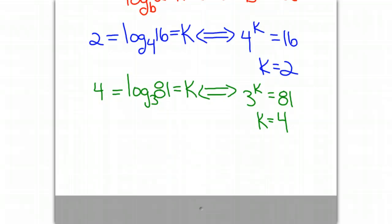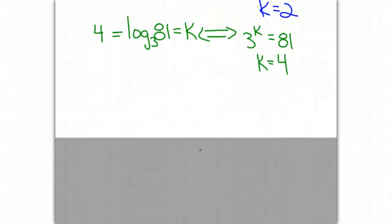Third example. Let's think about the log of 1 tenth. That's going to equal some value k. Now, this is the common log with a base of 10. So converting to an exponential expression, we know that 10 to the k is equal to 1 tenth. And so k will equal negative 1. Notice the negative exponent in order to flip the 10 to the bottom of the fraction.